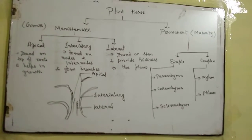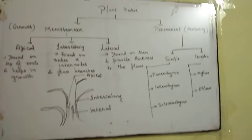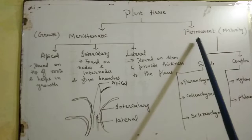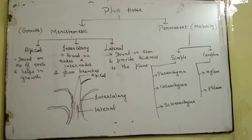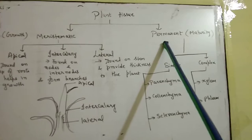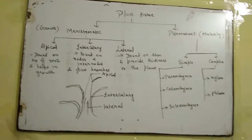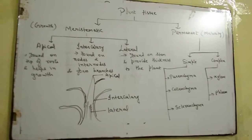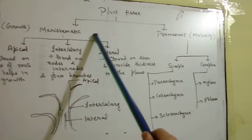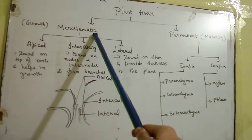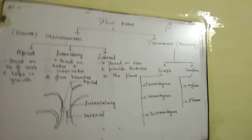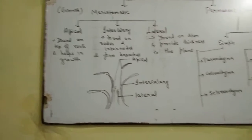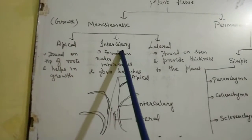Now we will continue with plant tissue. Plant tissues are of two types: meristematic and permanent. Meristematic tissue is present in the growing parts of the plant. Meristematic tissue is again classified into three types: apical, intercalary, and lateral.